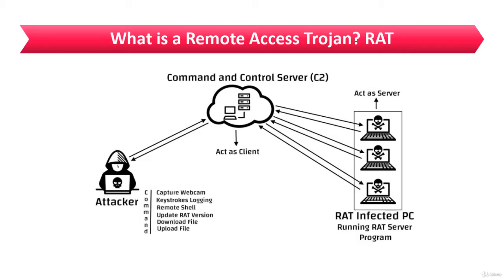Consider an example: Jason, the attacker, infects Alice's computer with a server.exe file and plants a reverse-connecting Trojan. The Trojan connects on port 80 to the attacker in Russia, establishing a reverse connection. Therefore, Jason the attacker has complete control over the victim's machine.